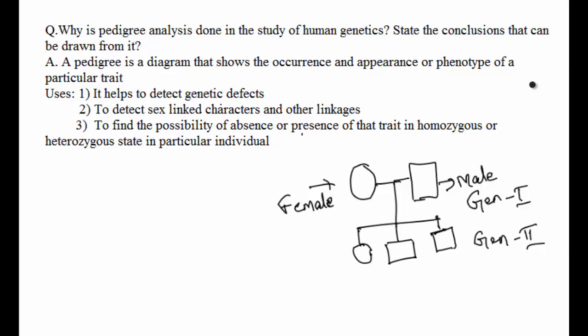The question is why is pedigree analysis done in the study of human genetics and what conclusions can be drawn from it. A pedigree is a diagram that shows the occurrence and appearance or phenotypes of a particular gene or organism and its ancestors from one generation to the next generation, mostly in humans.